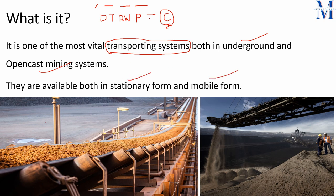The conveyor belt comes in two types: stationary form and mobile form. The stationary form — once we install it, it remains fixed and works fully for as long as needed. The mobile form can be moved from one space to another. For example, bucket wheel excavators can use conveyor belts and move them from one place to another using the mobile form.